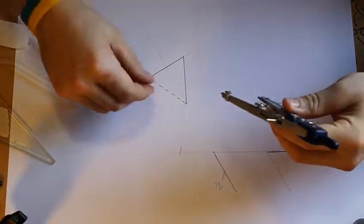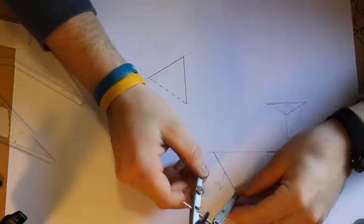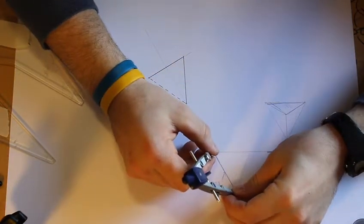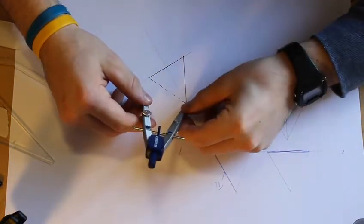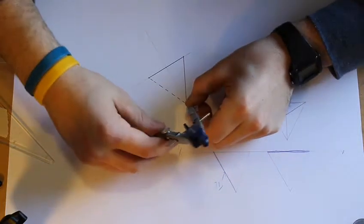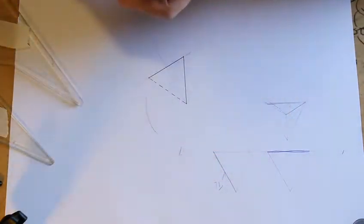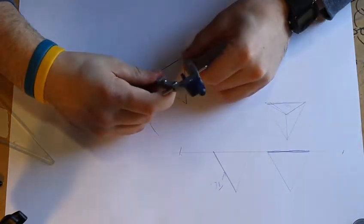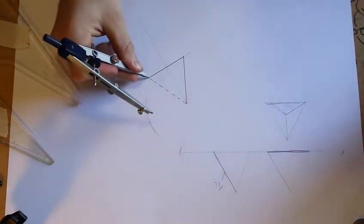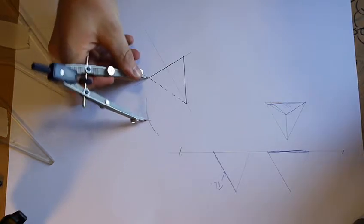So firstly I can take my true length once again and I can swing it from the top of my first equilateral triangle like so. I can then come back and take my base length. It should be identical because it's an equilateral triangle. Swing it and where these intersect give me my second triangle.